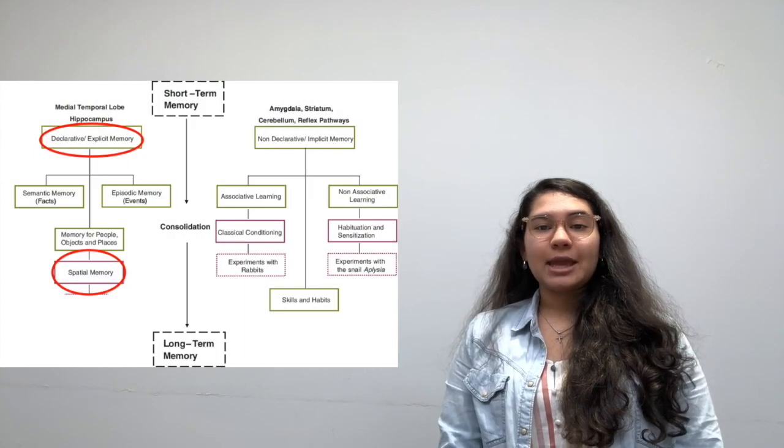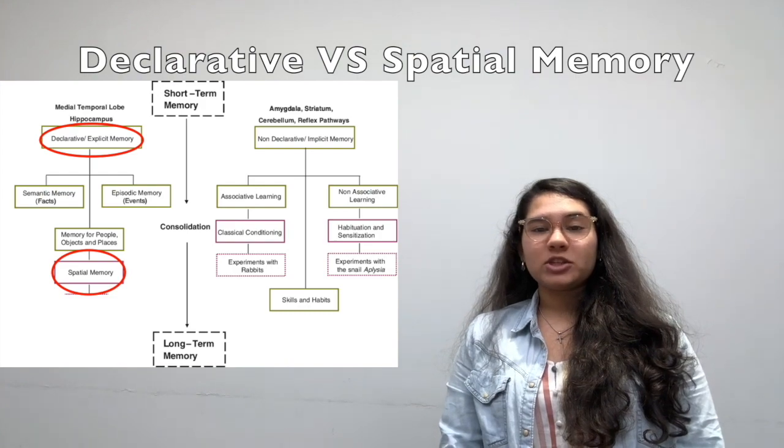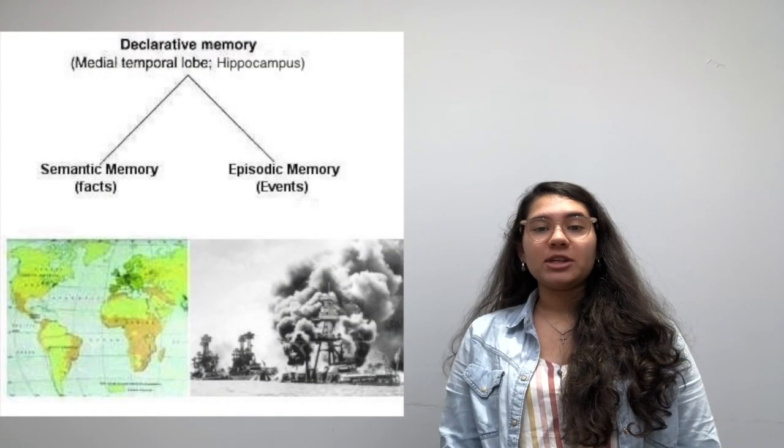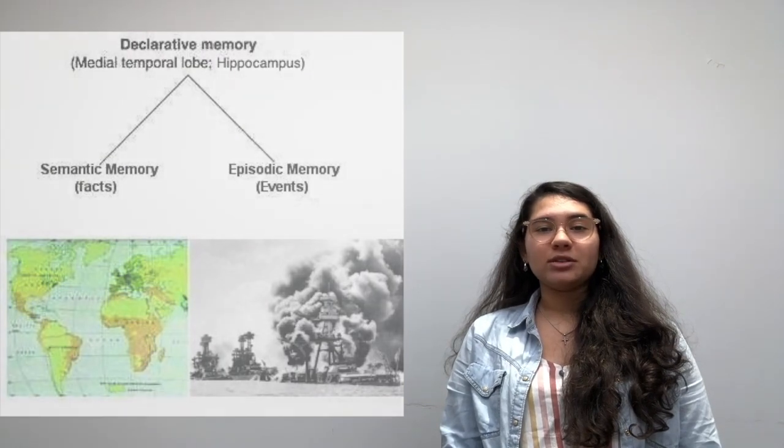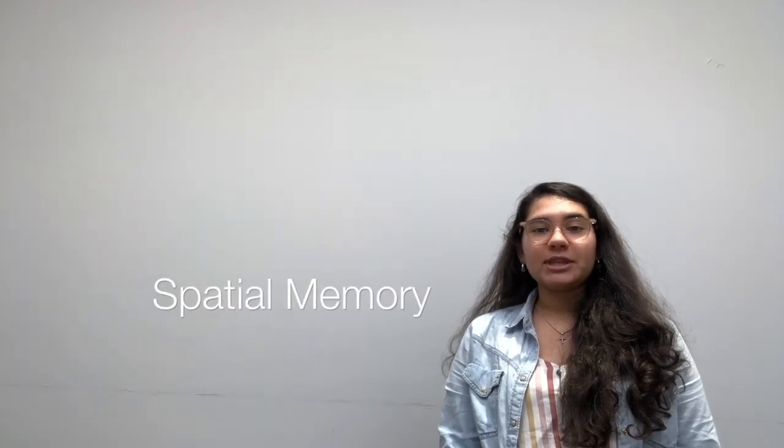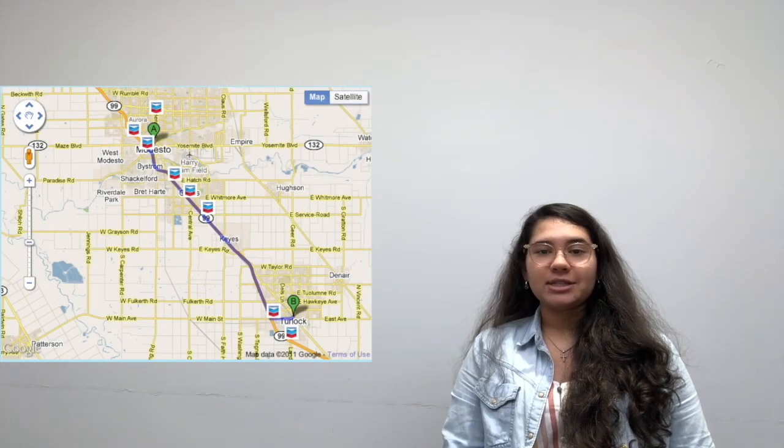There are two types of memories that the hippocampus is able to process: declarative memory and spatial memory. Declarative memory involves information about facts or events that can be consciously recalled. Spatial memory is what the cab drivers are using. This type of memory involves the storage and retrieval of information that has to do with formulating a route to a desired destination and remembering the location of objects.